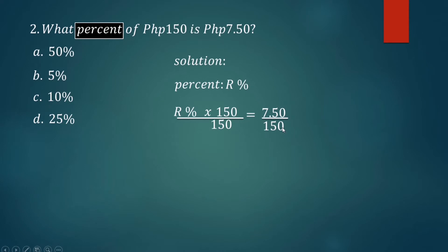To get R, divide both sides by 150, then cancel 150, bring down the R percent. Then 7.50 divided by 150 equals 0.05. We're going to change this result, this decimal, to percent. We have this rule: